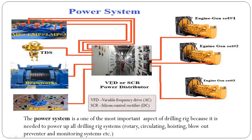In case we have a VFD power distribution system on the rig, it means we will have AC electric motors working with the rotary table, draw works, TDS, and mud pumps. Electric power from the power distribution system is then given to all these individual rig components including mud pumps, TDS, draw works, and rotary table.